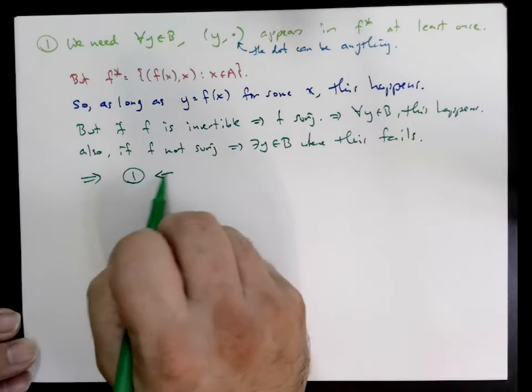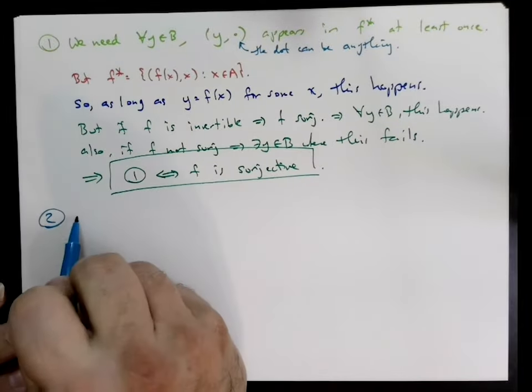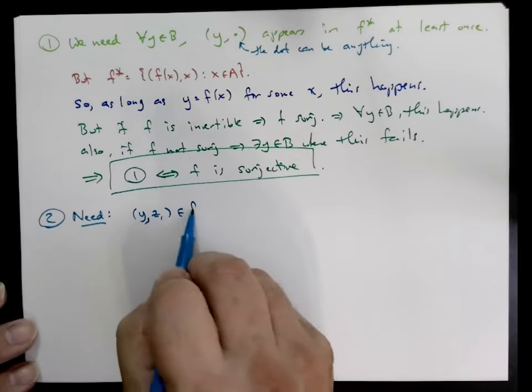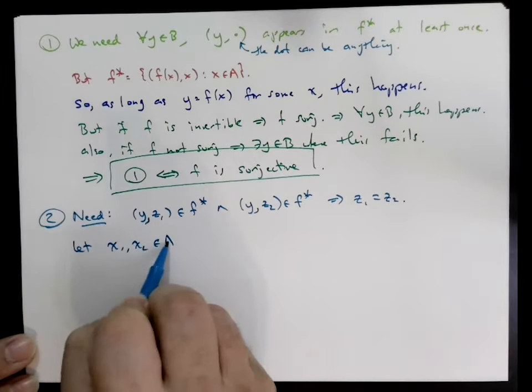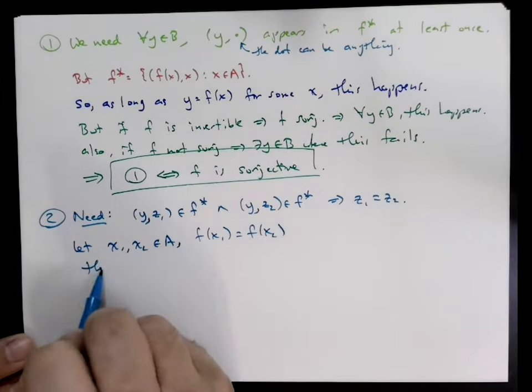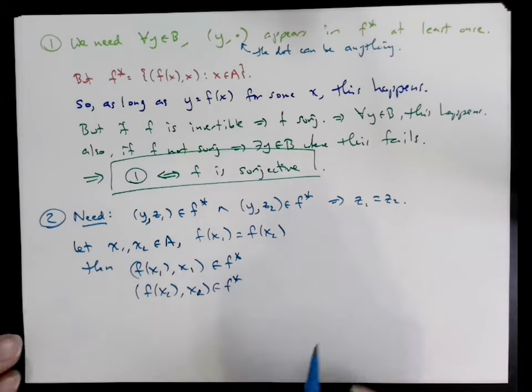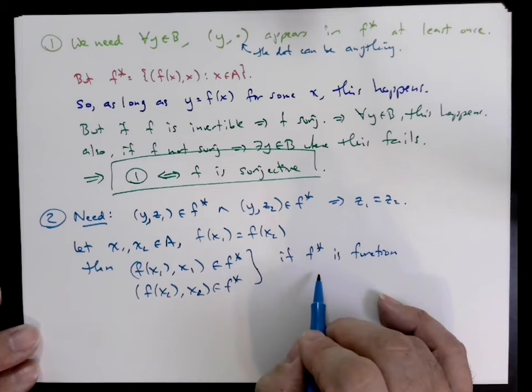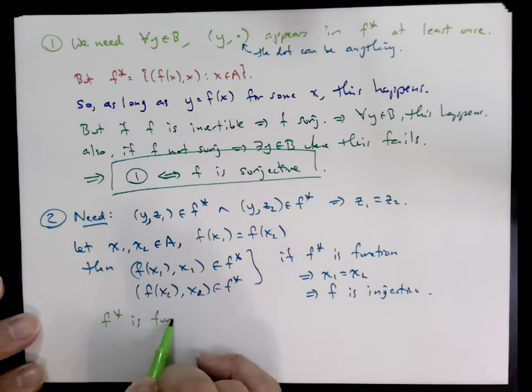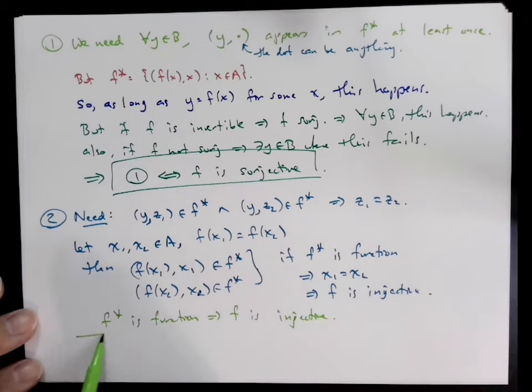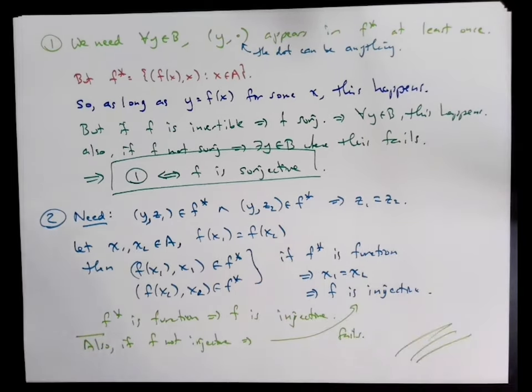We also need that if (y, z1) is in F* and (y, z2) is in F*, we need that z1 be equal to z2. So let's let x1 and x2 be in A and assume that f(x1) equals f(x2). Then (f(x1), x1) is in F*, (f(x2), x2) is in F*. If F* is a function, this implies that x1 equals x2. Therefore, f must be injective.